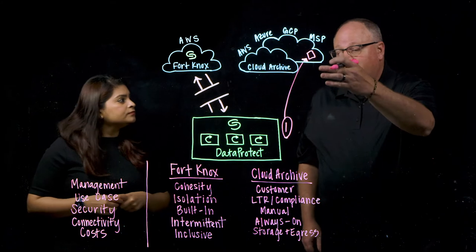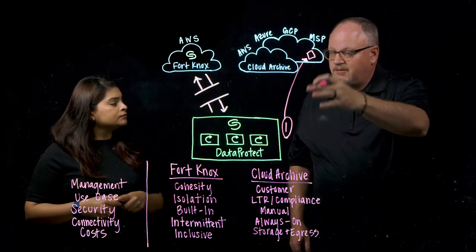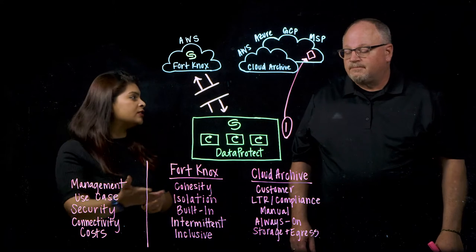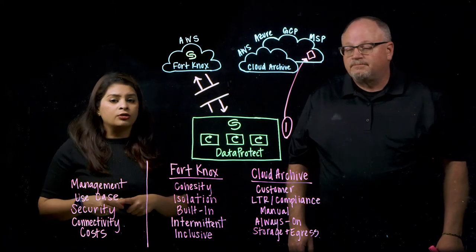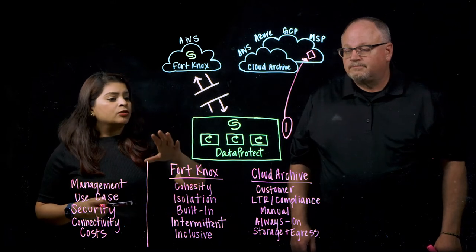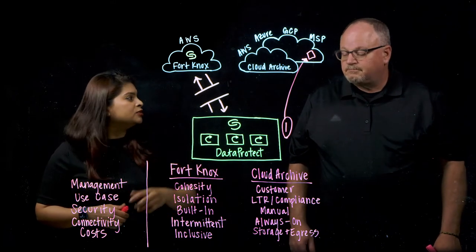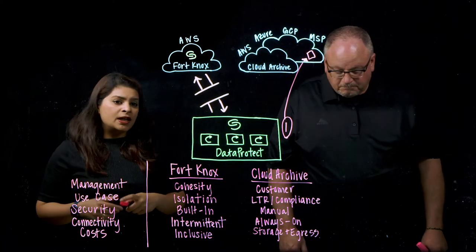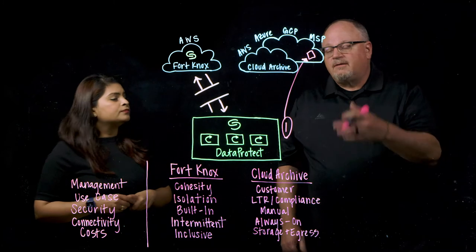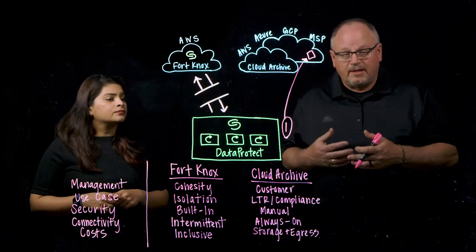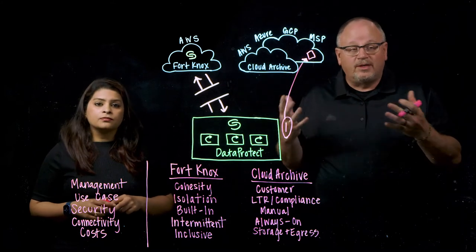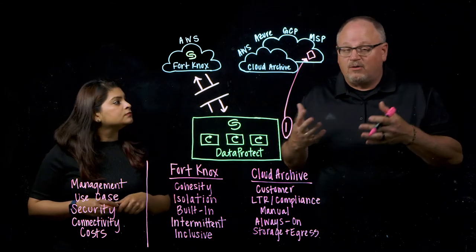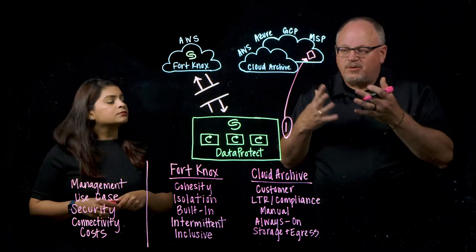That's actually different from Cloud Archive, because in Cloud Archive we require a persistent connection to be established for our replicas. The next security feature is management isolation built into Fort Knox, which prevents authorized users who have access to the on-prem cluster from being able to access Fort Knox data. We do this through Cohesity's Managed Key Management System, or KMS. With Cloud Archive, the KMS is managed by the customer, which means a rogue internal user with authorization could go in and delete or change your data or policies. Fort Knox helps you avoid that situation.